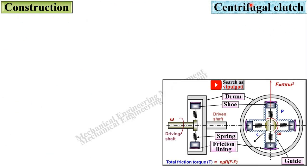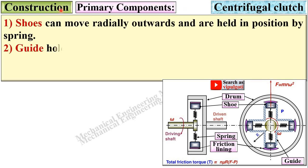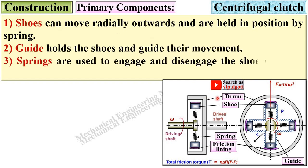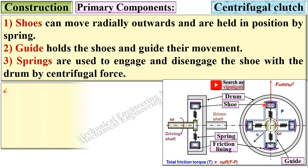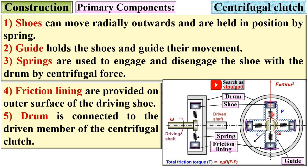Next is the construction of the centrifugal clutch. This is a very important figure, definitely useful for examinations. The primary components include shoes, which can move radially outwards and are held in position by means of a spring.